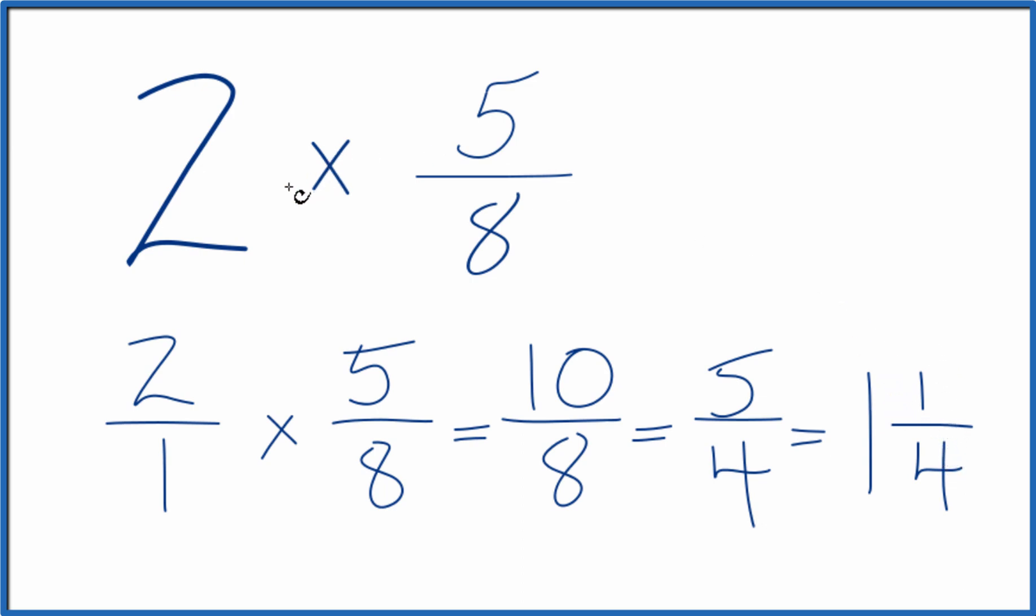This is Dr. B, multiplying 2 times 5 eighths. The answer? 5 fourths, or if you want a mixed number, 1 and 1 fourth.